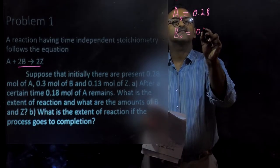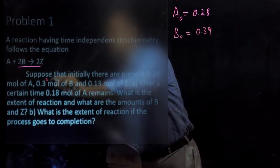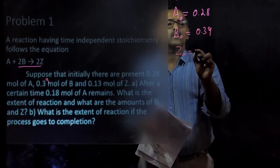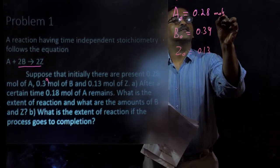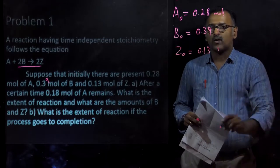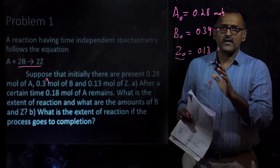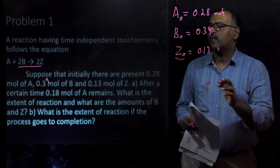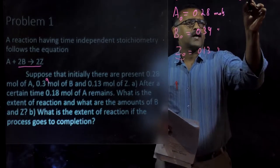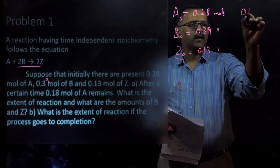B₀ is 0.39 moles — note the correction here, it is 0.39 moles. For the product C, C₀ is equal to 0.12 moles. Note that C is already present at the initial level itself, meaning we are doing the kinetics after C₀ of 0.13 moles has already been formed. At time t, A will have reacted and it is given that 0.18 moles of A remains.